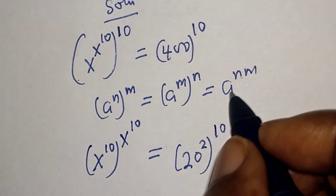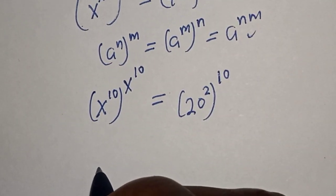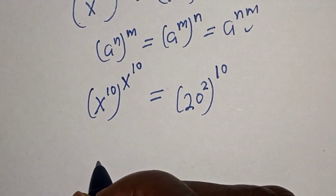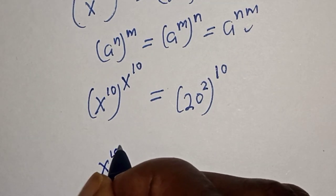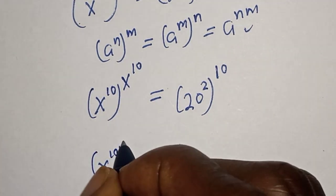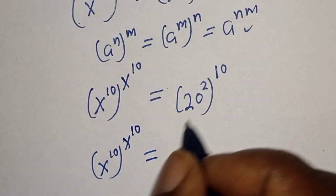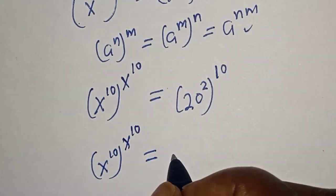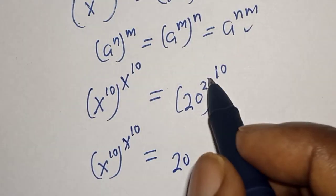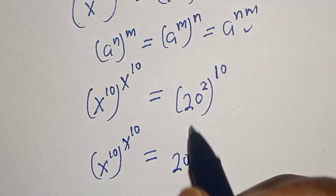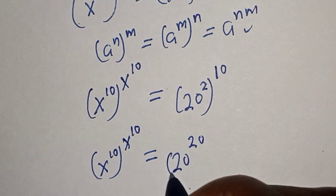So from this rule, we have s raised to power 10, raised to power s raised to power 10, is equal to 20 raised to power 10 times 2, that is 20 raised to power 20.